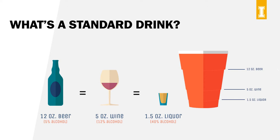There may be distractions in the environment that prevent you from keeping track of or remembering how many drinks you've had. Parties with loud music and a lot of people around, drinking games, communal drinks, and other people pouring the drinks are just some examples of distractions.